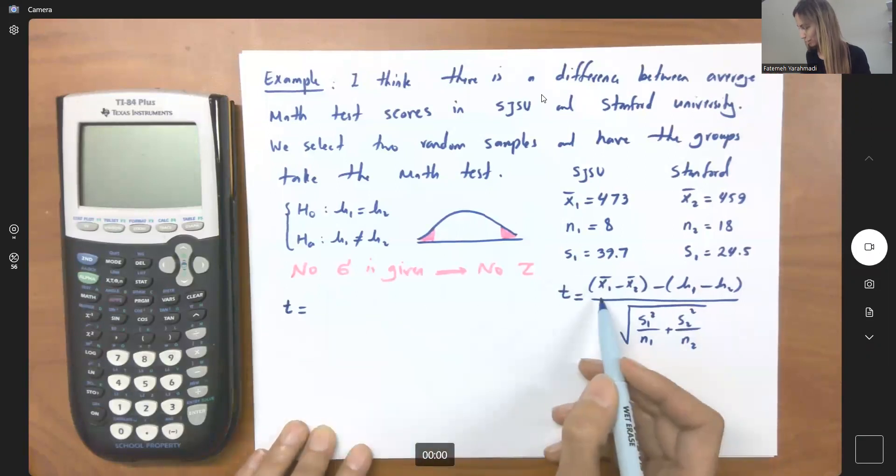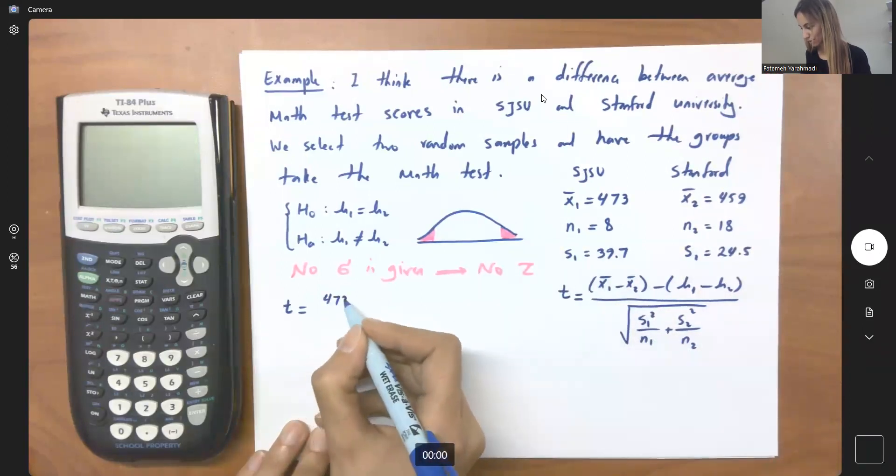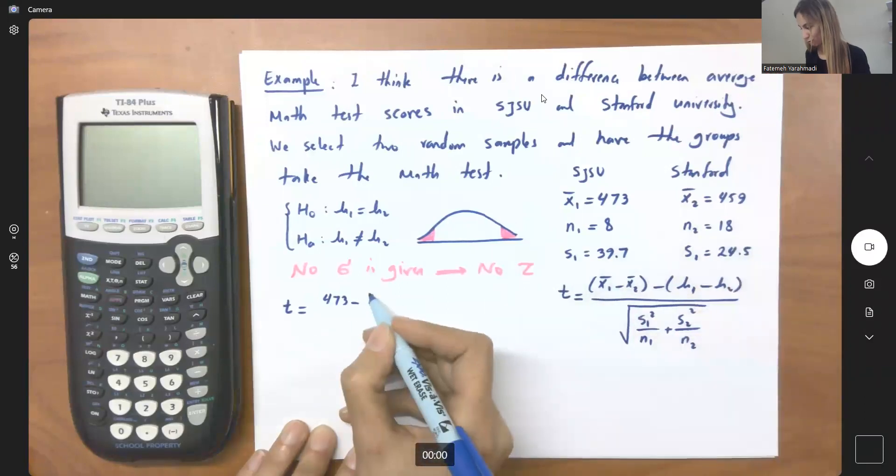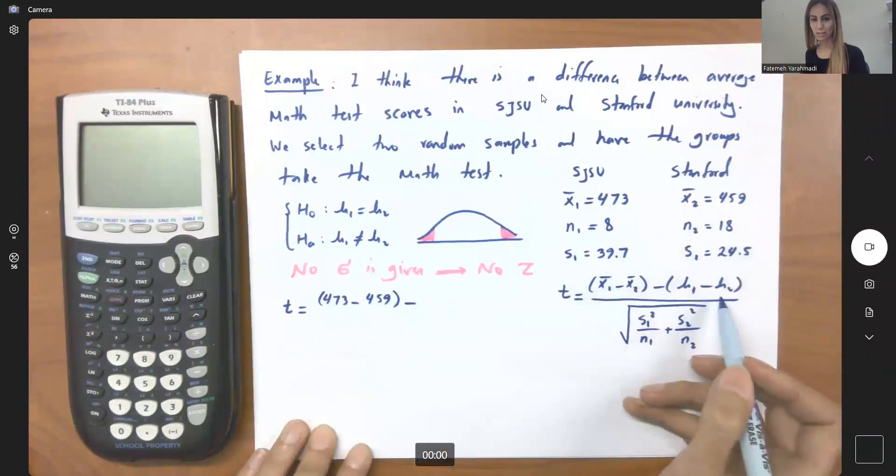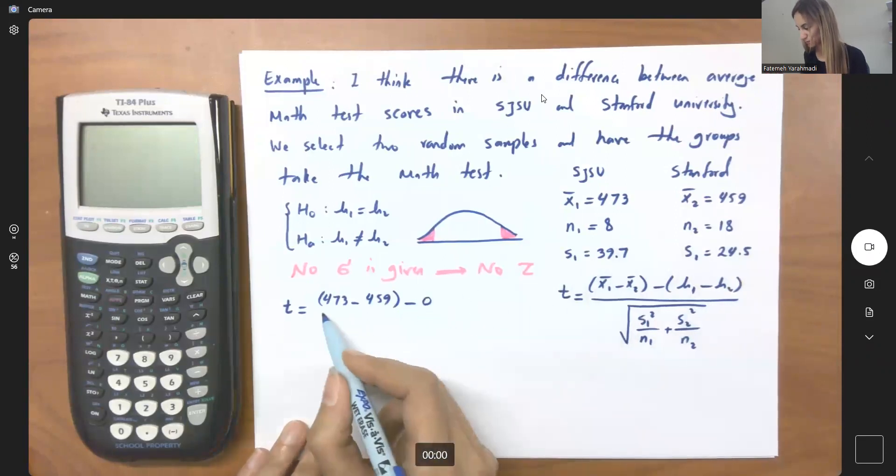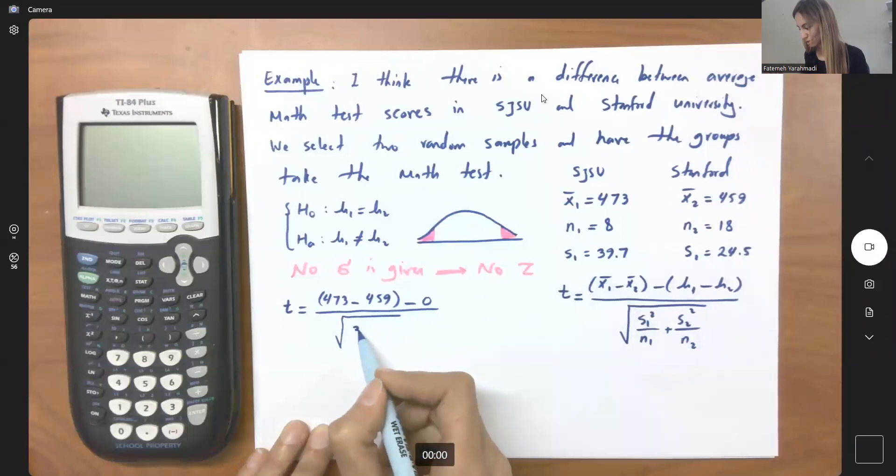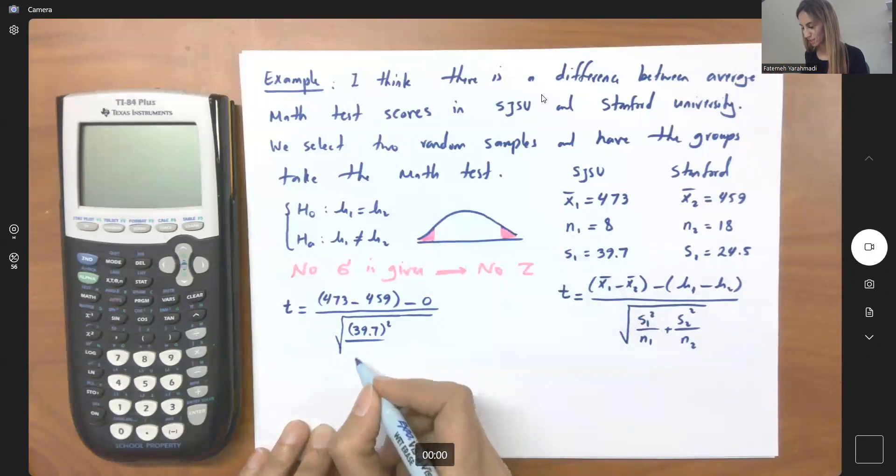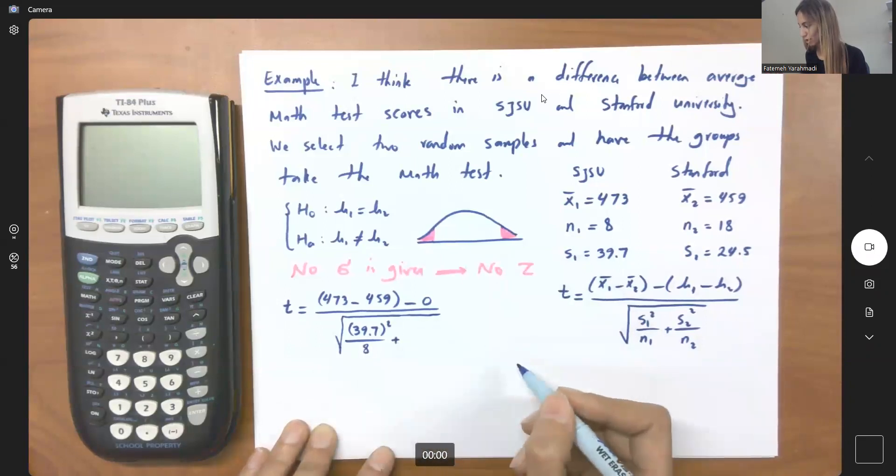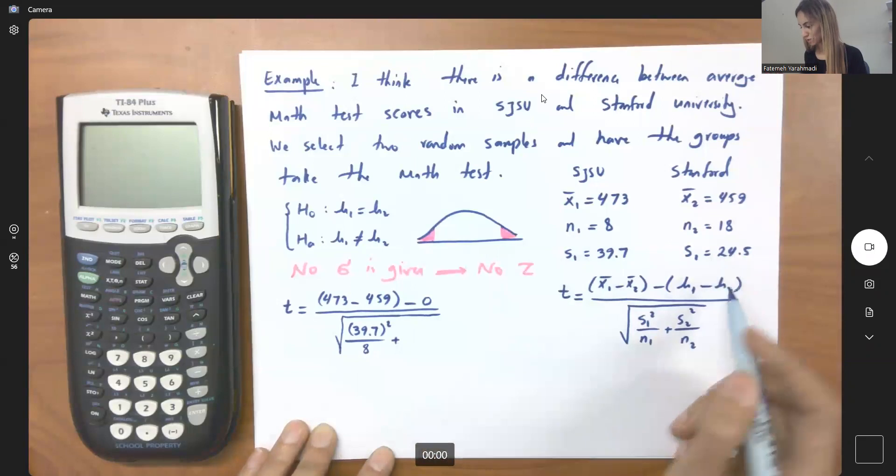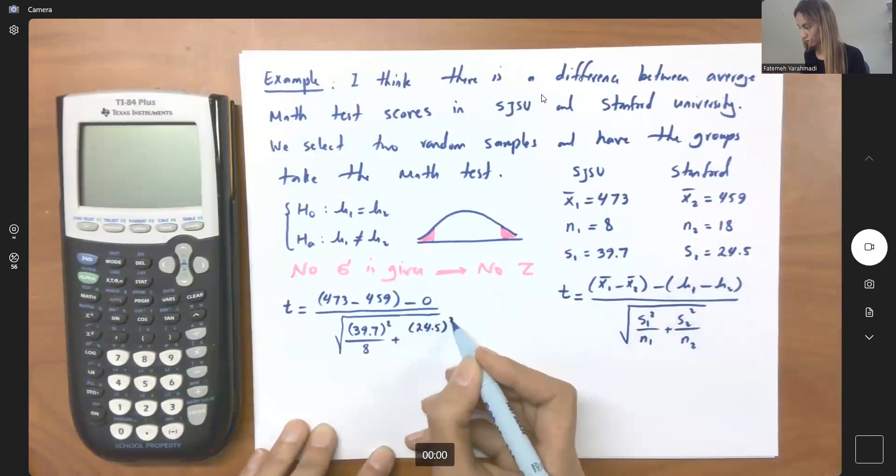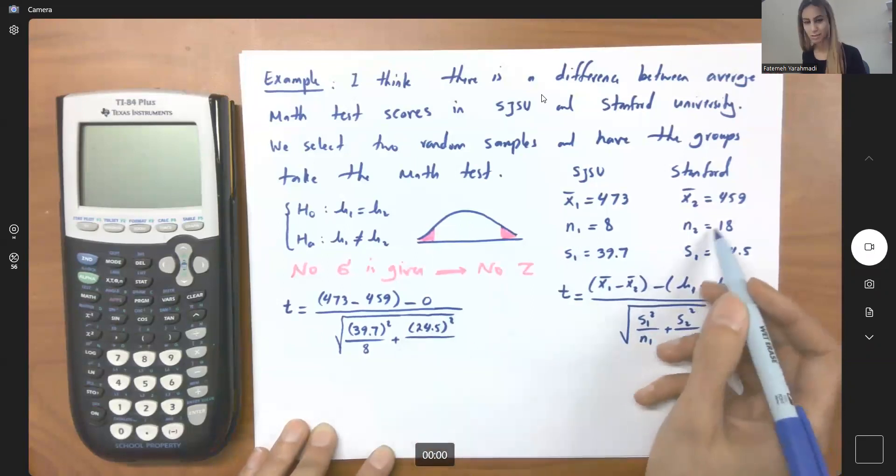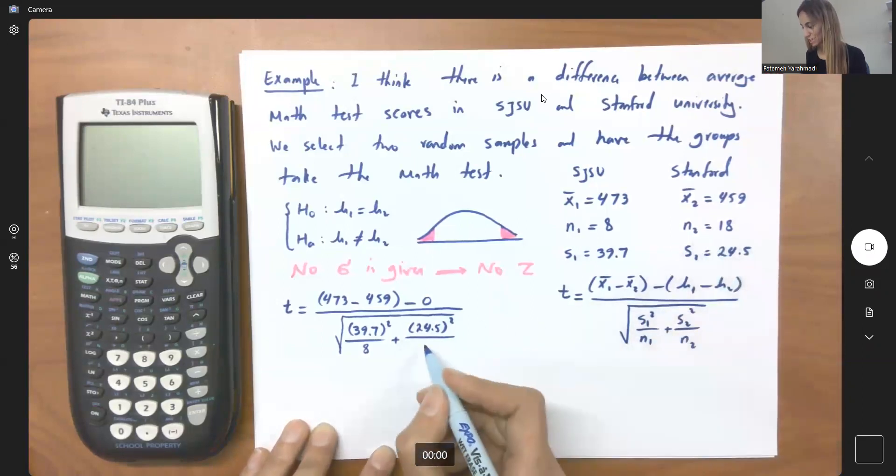t is equal to, so on the numerator, I have 473 minus 459 minus the difference between population means going to be zero, divided by square root of s1, which is 39.7 to the second, divided by n1, and I have eight students in San Jose, only eight agreed to take the test, plus standard deviation from the second university, 24.5 to the second, divided by the number of students, 18.